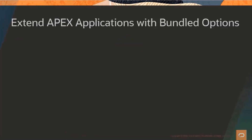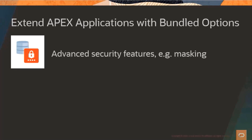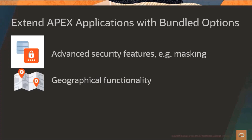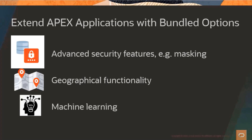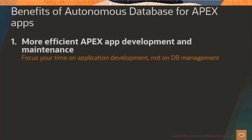Autonomous comes bundled and pre-configured with various features that were previously only available as add-ons or database options. Most of these were not visible to the end user, but Autonomous comes bundled with some features that can add functionality that are actually visible in your application. For example, you can leverage advanced security features to mask sensitive data such as credit card information. You can add geographical functionality to your apps using Spatial. You can even add machine learning to train models to make predictions and then integrate them into your APEX applications.